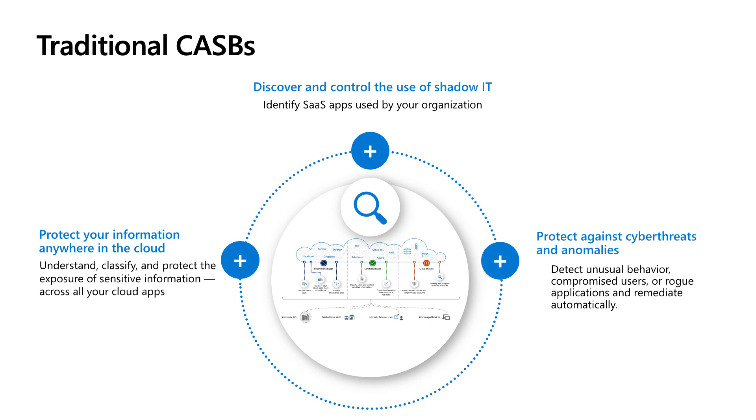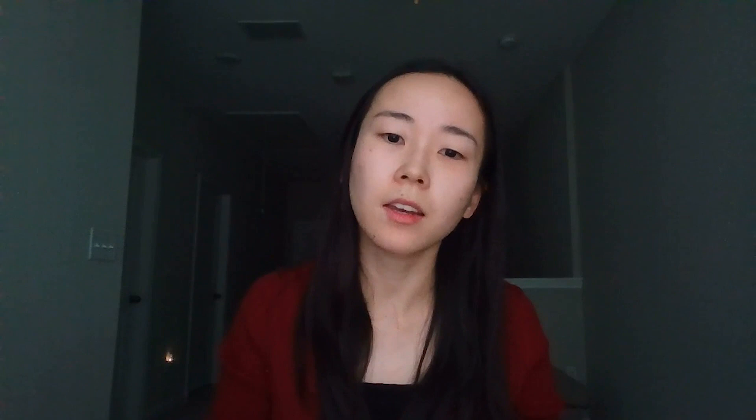Let's first talk about traditional CASBs — Cloud Access Security Brokers. There are a few fundamental pillars that come with a CASB. The first is called discover and control the use of shadow IT: discovering all the applications in a customer's environment, which ones users are accessing, and which applications customers may not be aware of. For example, maybe after working from home, Joe Smith is now watching Netflix on his corporate device. We'll showcase that traffic, the transactions, the users accessing those applications, and apps that may be more risky — apps that aren't compliant or don't have HIPAA included as part of their risk factors.